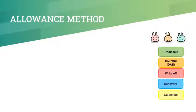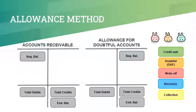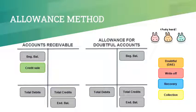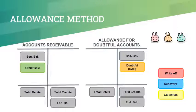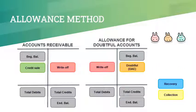Under the allowance method, we need to take note how transactions affect the balances of accounts receivable — with a normal debit balance — and allowance for doubtful accounts — with a normal credit balance. Credit sale increases accounts receivable. When accounts become doubtful, doubtful accounts expense is recognized, and this increases the allowance for doubtful accounts balance. The write-off of worthless or uncollectible accounts decreases both accounts receivable and allowance for doubtful accounts. Recovery of previously written-off accounts increases both accounts receivable and allowance for doubtful accounts.